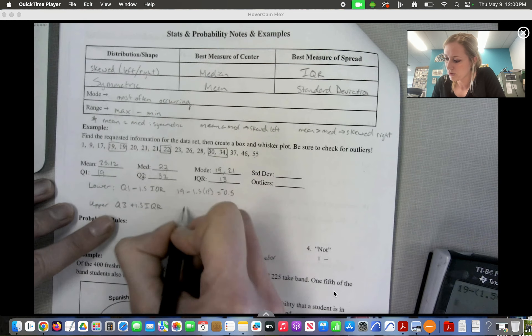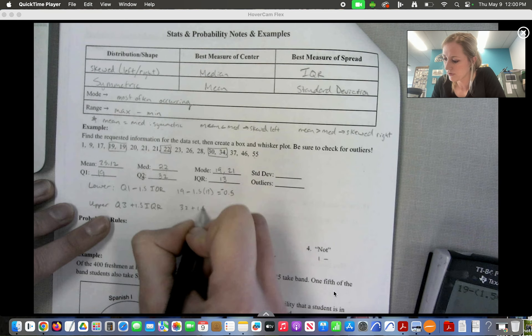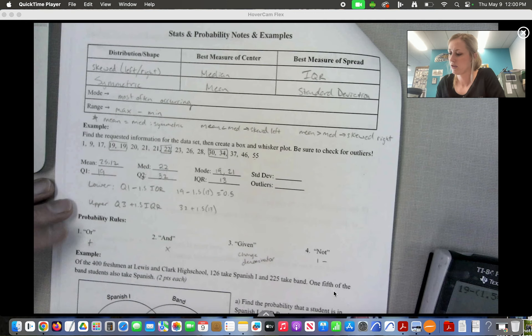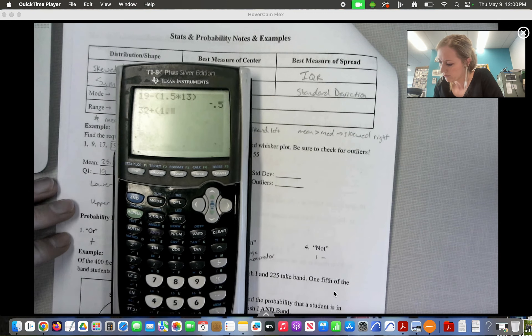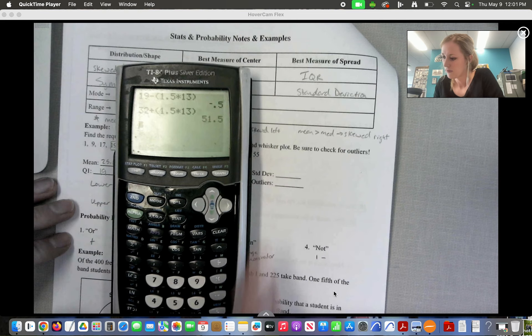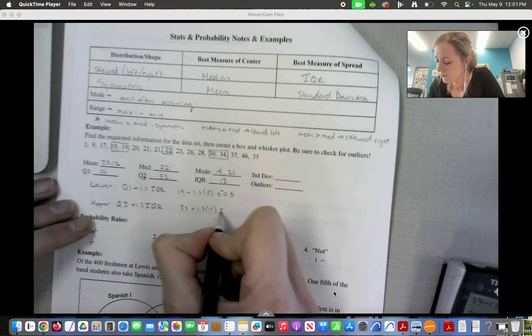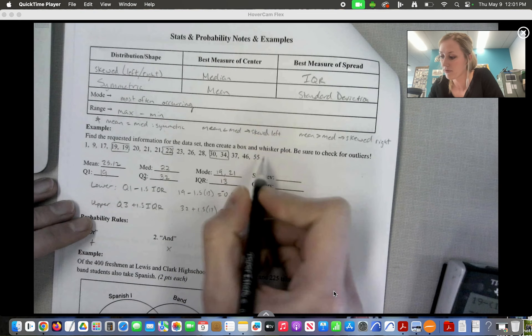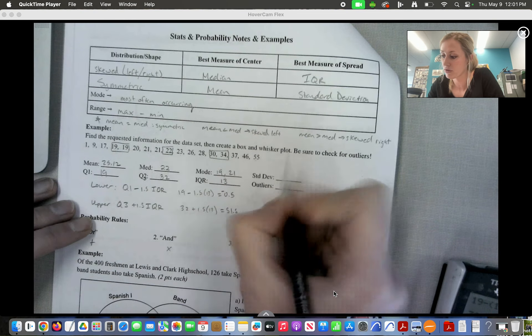This one we're going to do Q3 plus 1.5 of 13. So 32 plus 1.5 times 13. 51.5. So do we have anything above 51.5? We do. So 55 would be an outlier.